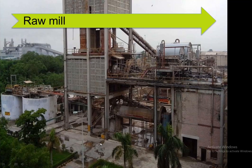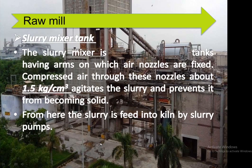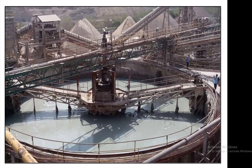In the raw mill process, slurry mixer tanks have two arms with air nozzles fixed on them. Compressed air through these nozzles — at approximately 1.5 kg per cm² — agitates the slurry and prevents it from becoming solid. From here the slurry is fed into the kiln by slurry pumps.